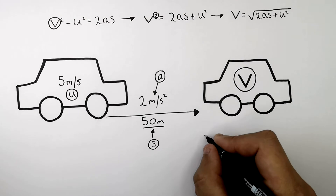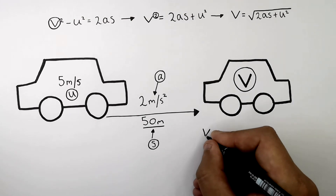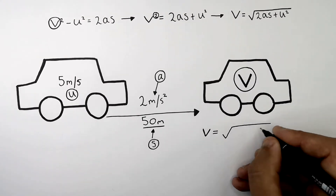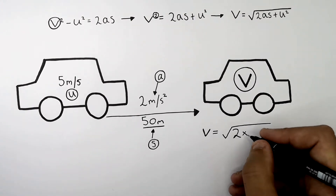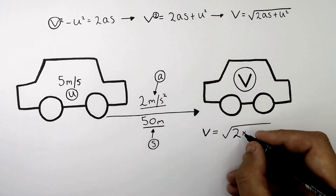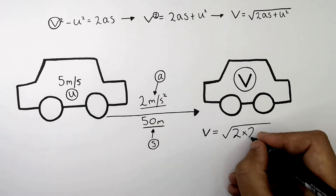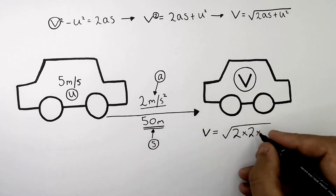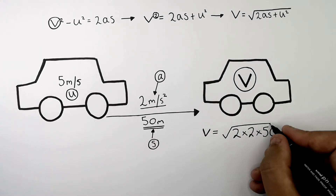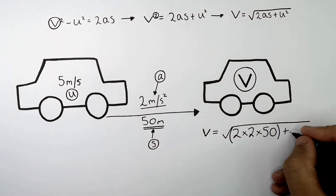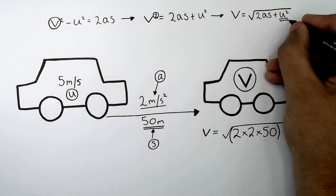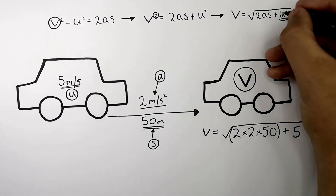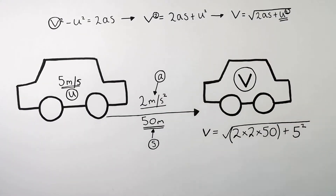Substituting the numbers: v, the final velocity, equals the square root of 2 times a, the acceleration, that's 2 metres per second squared, times the displacement, which is 50 metres. And then you add that to u squared — so you add 5 squared, which is 25.